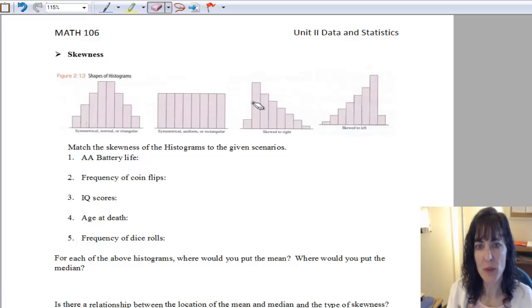And it could either be skewed to the right where the tail is to the right end or skewed to the left where the big tail is on the left end. So those are the main shapes that we want to talk about.